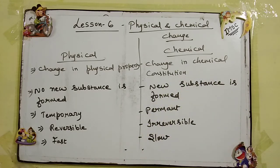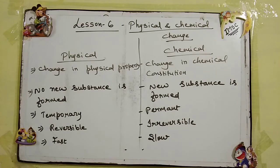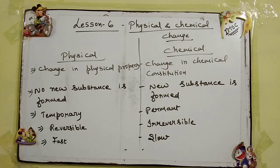Second comes change in chemical constitution. Change in chemical constitution means change in chemical property. Chemical property means किसी भी substance का chemical nature change होना. For example, formation of curd — जब milk से curd बनता है, तो उसकी property totally change जाती है, उसका texture change जाता है. Milk अलग दिखता है और curd अलग दिखता है. Milk sweet होता है और curd sour in taste होता है. तो जब किसी भी substance का chemical nature और chemical constitution change हो जाता है, that is known as chemical change.